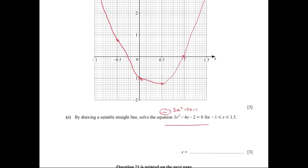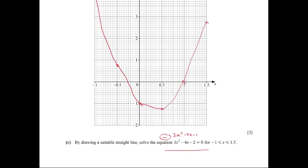Now we have to solve the final question. By drawing a suitable straight line, solve the equation 3x² - 4x - 2 = 0.